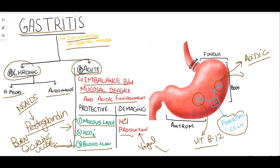Excessive HCl production due to vagal stimulation occurs particularly due to brain injury. Brain injury leads to excessive stimulation of the vagus nerve, and this vagal stimulation produces excessive HCl. Brain injury produces Cushing's ulcer of the stomach.